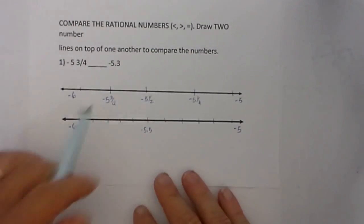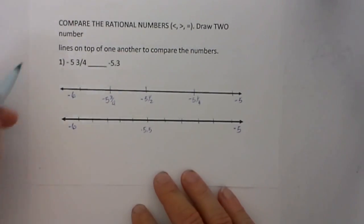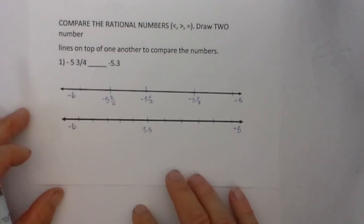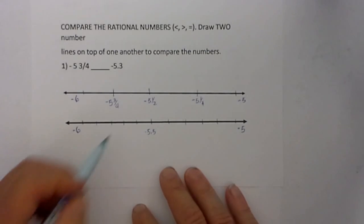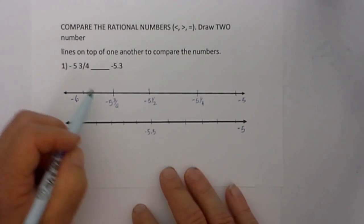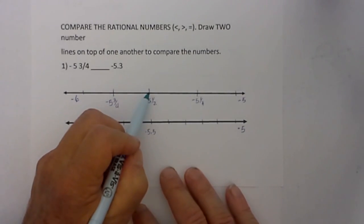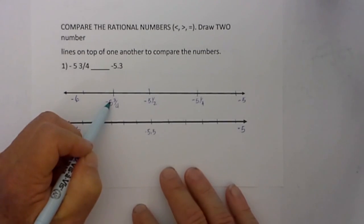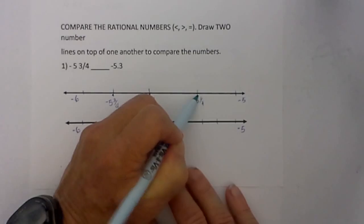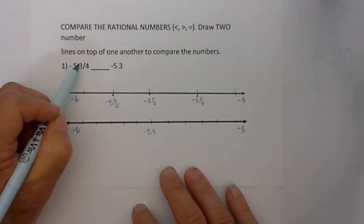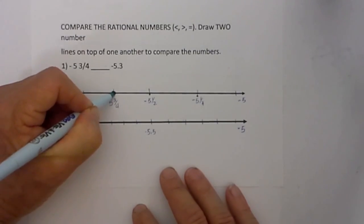So I have two number lines between negative 6 and negative 5. And this first one I have divided it in fraction form. And you will notice that the midpoint is negative 5 and a half. So it goes negative 5 and 3 fourths, negative 5 and a half, negative 5 and 1 fourth. So I will plot negative 5 and 3 fourths right here.